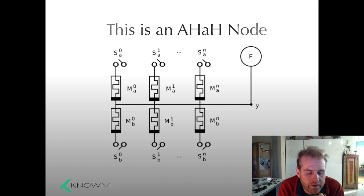This is an AHA node. This is multiple synapses all linked together. This is sort of the equivalent of a neuron and these are the equivalent of its synapses. So this is the 2-1 configuration and this is an AHA node with three synapses.